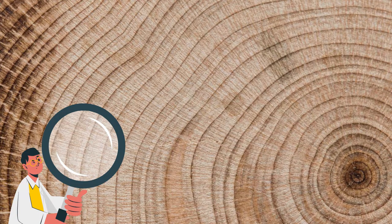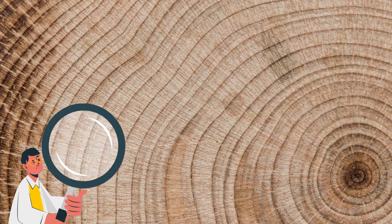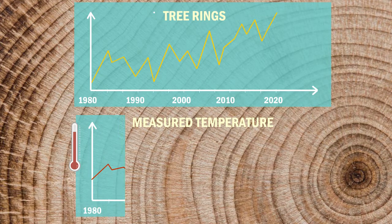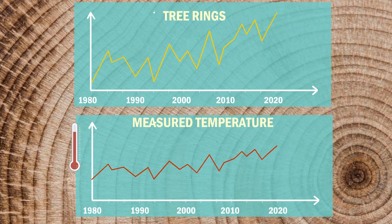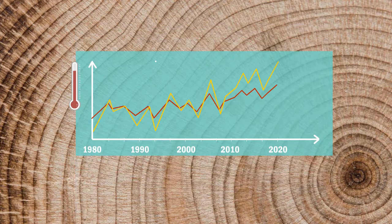This is done in two steps. First, we must calibrate our scale. To do this, we use the temperatures recorded in recent years to understand how the data from the rings changes with temperature.